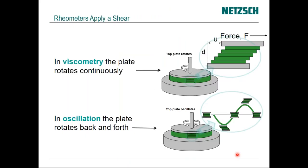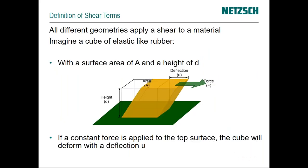In viscometry we're rotating the upper plate round and around, and hopefully the sample flows in a laminar way — like a pack of cards. There's a force F on the upper plate, the sample may be displaced u, and it has a height d, which is the gap between the plates. In oscillation you oscillate just a little bit to the right and then to the left, repeatedly, probing the structure without destroying it. This is analogous to DMA, but here it's rotating left and right a little bit between the two plates, so it could even be a liquid.